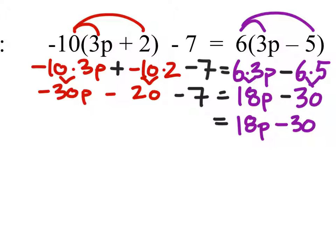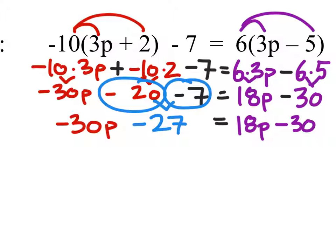But on the left side we have two of these terms that do not have p's. So we'll combine these two to give us a negative 27. And that's negative 30p minus 27 equals 18p minus 30.